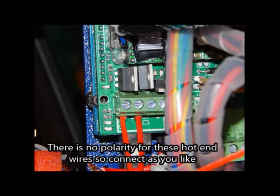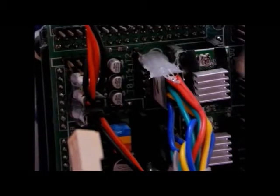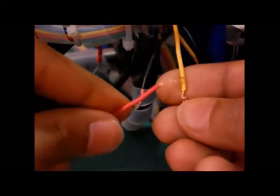Let's connect the wires to the RAMPS board. First, connect these two red wires of the hotend heater cartridge to the D10 connector of your RAMPS board. Now connect the thermistor wires to T0.